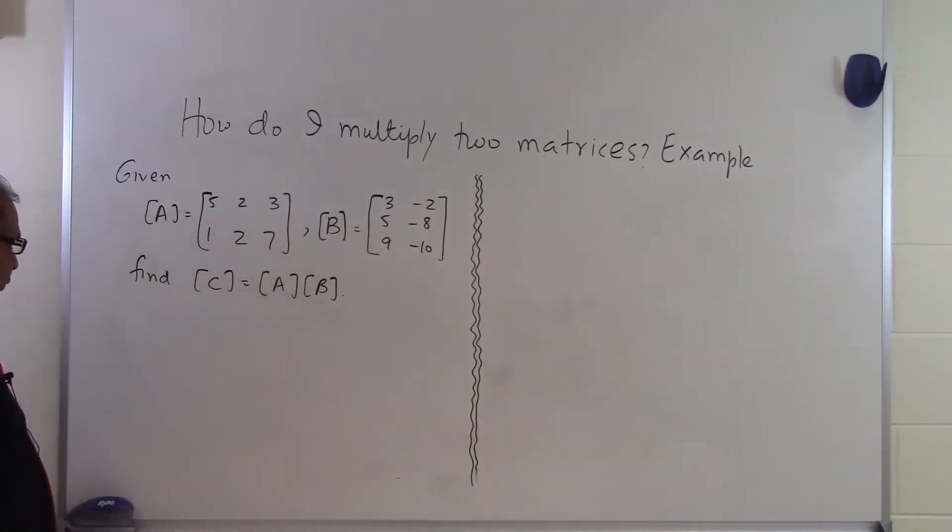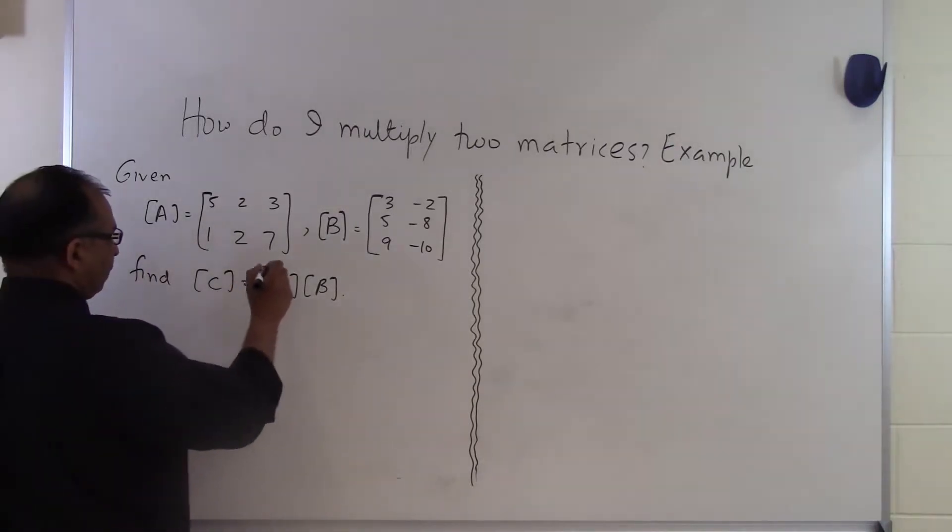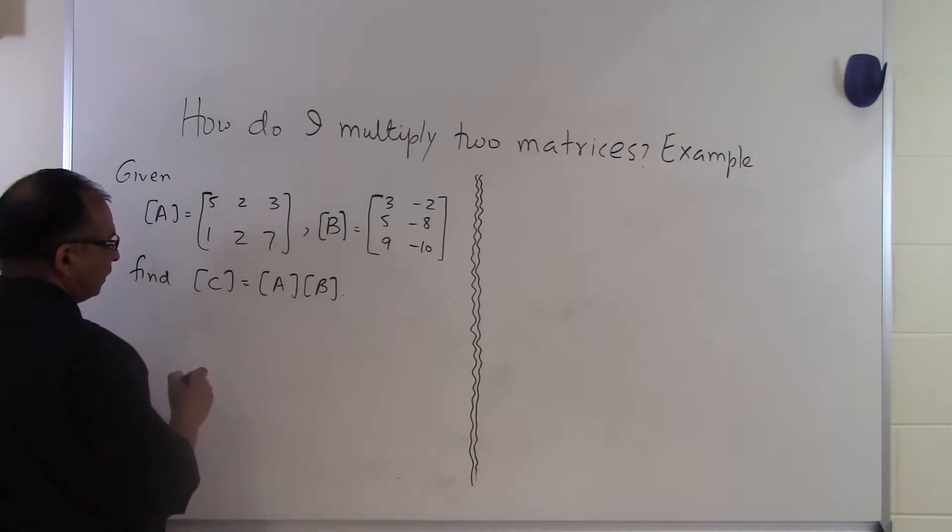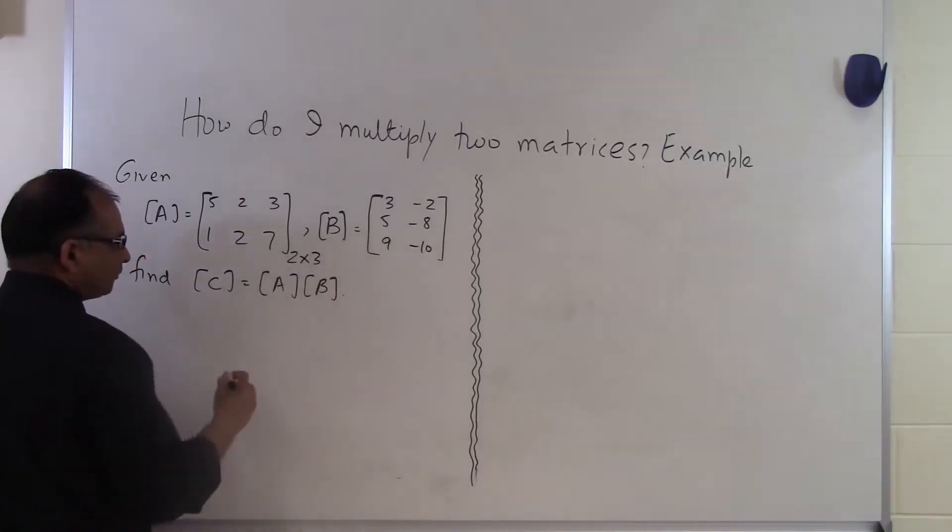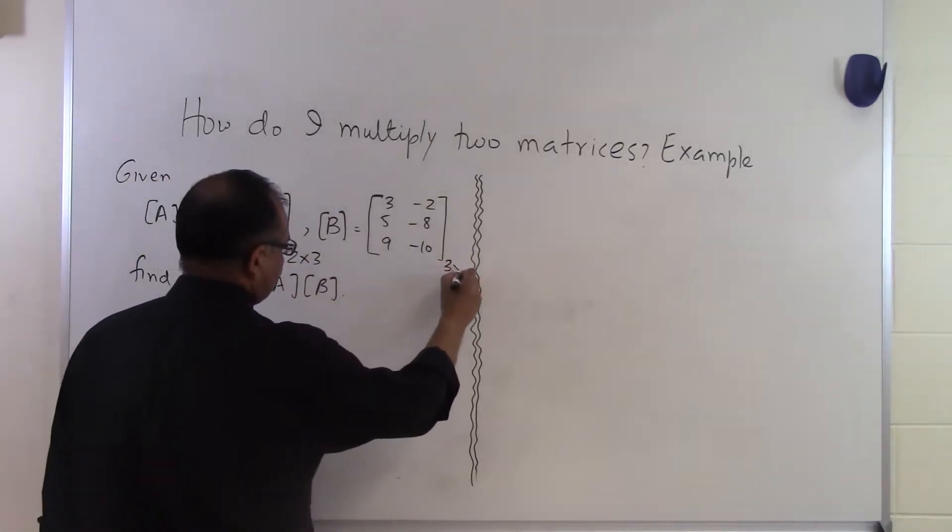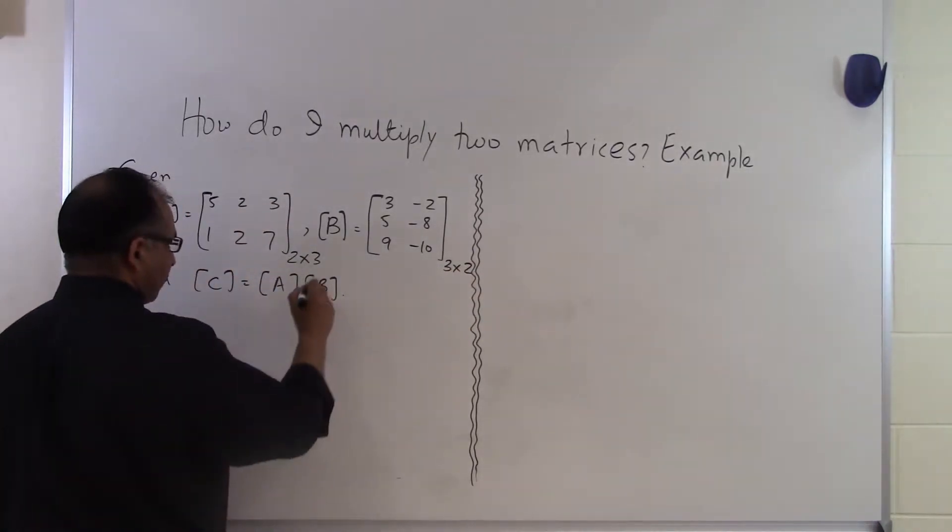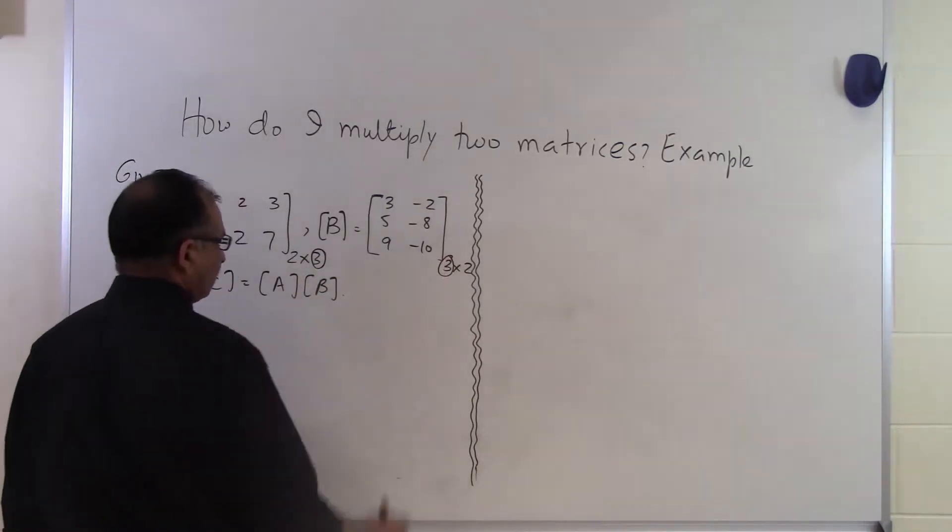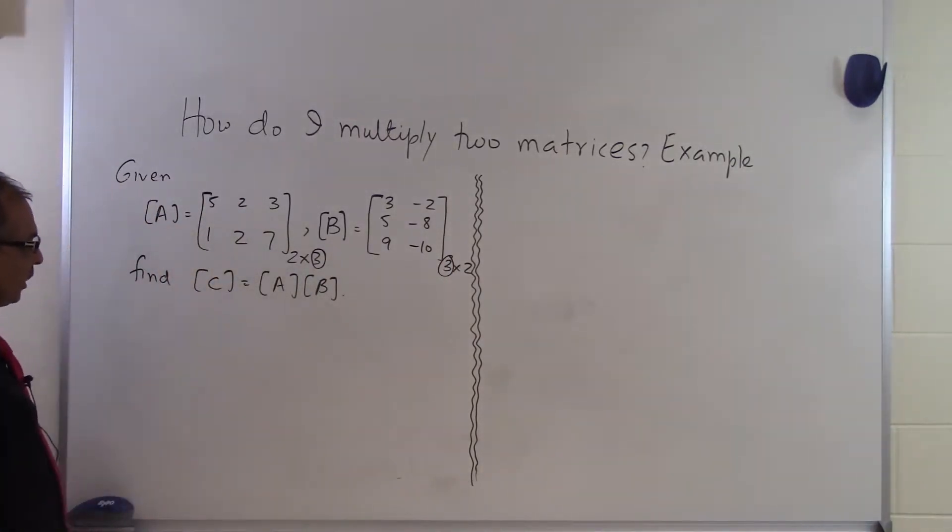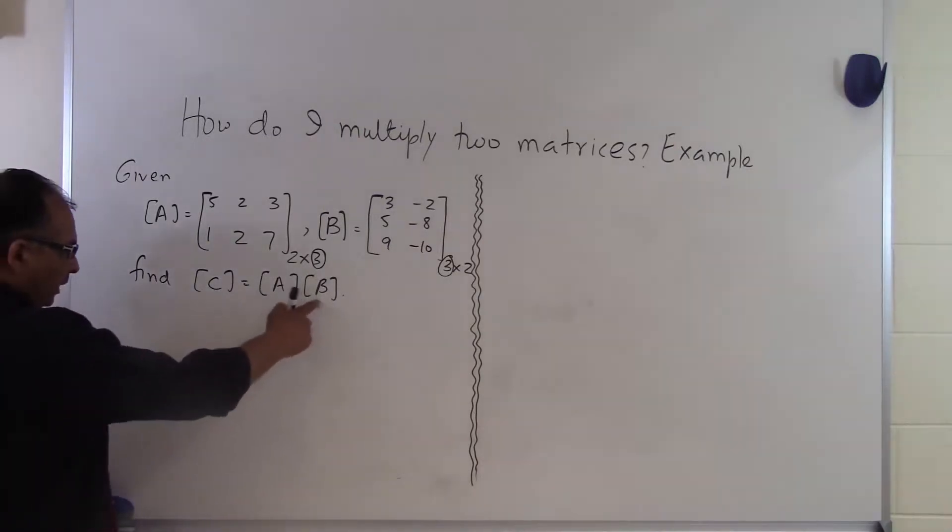Now the first thing which you have to do before you start multiplying two matrices is to check for the order of the A and the B matrix here. So this one is two rows and three columns and this one is three rows and two columns. So you have to check if the number of columns of A is same as the number of rows of B, which it is, so that means that A and B can be multiplied as A times B.